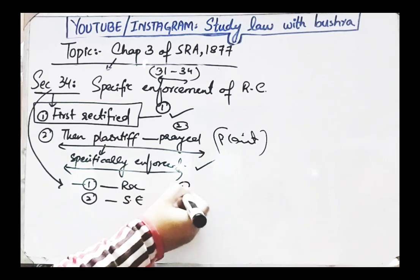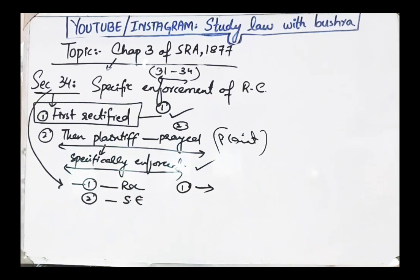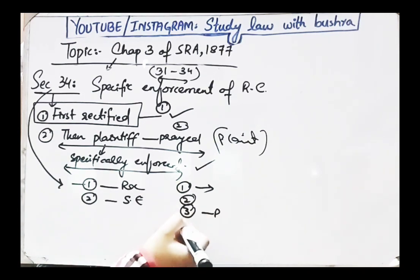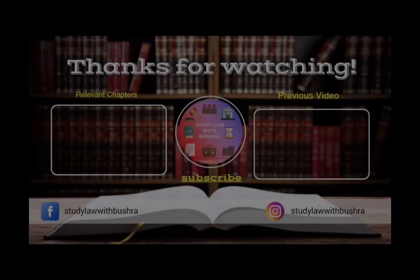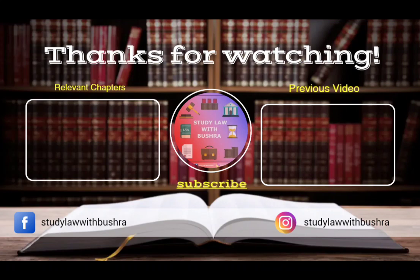So that was our discussion on Sections 31 to 34, in which we discussed what rectification of instrument is, how it is done, on what elements it is based, what initial presumption the court takes, the principles of rectification, and finally the enforcement in detail. I hope this lecture was understandable. If you watched this video attentively and liked it, please like, comment, and subscribe to the channel. Thank you so much for watching. Allah Hafiz.